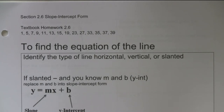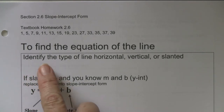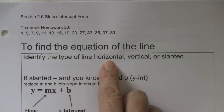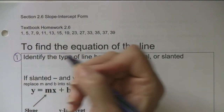They're going to ask us to do something different - they're going to ask us to find the equation of the line. So they've been having us graph lines from the equation, giving us the equation and asking us to find the slope. Now they're going to ask us to find the equation of the line. The first thing you do is identify whether or not the line is horizontal, vertical, or slanted. You can tell which one it is by the slope - that's what you do first.